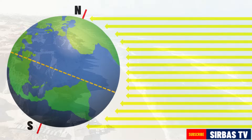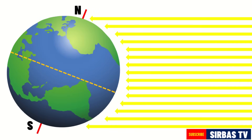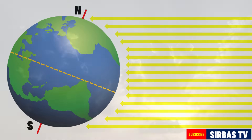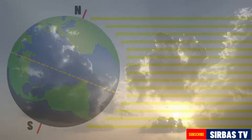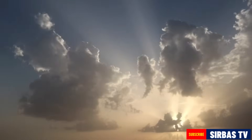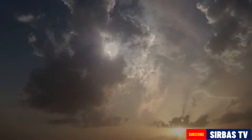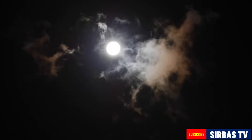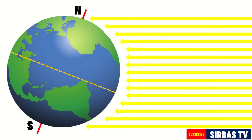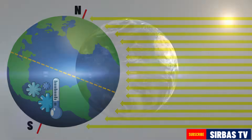On the other hand, the southern hemisphere during the month of June receives lesser direct rays from the sun. It experiences a shorter period of daytime and a longer period of nighttime. Hence, countries located in this hemisphere experience winter during this month of the year.